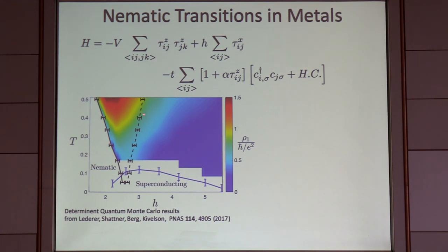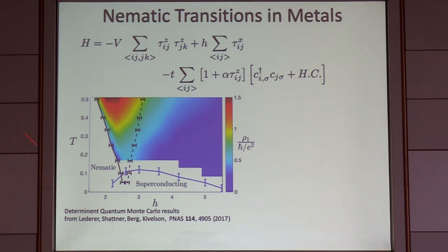There is a quantum critical regime here in a critical fan about the quantum critical point, and there is a superconducting transition that occurs below this line.